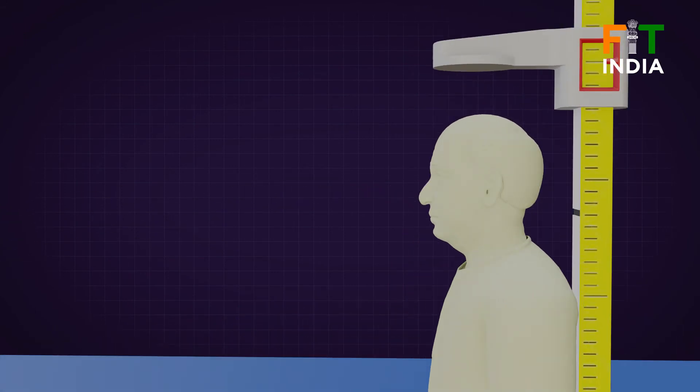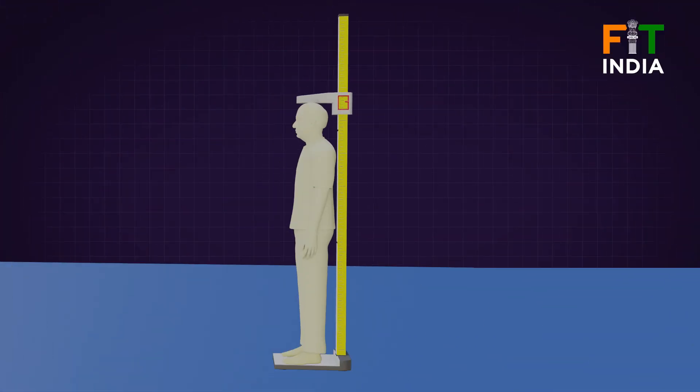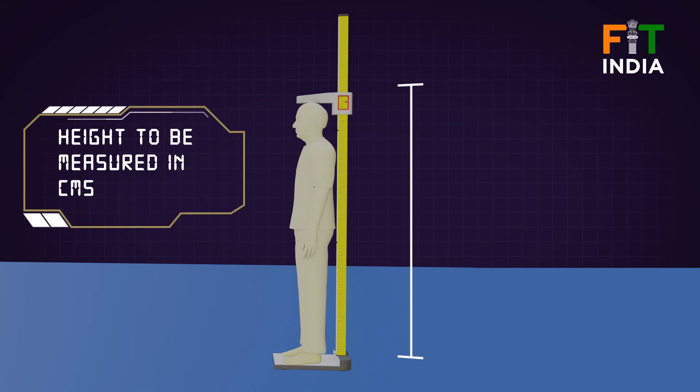Lower the headpiece until it firmly touches the crown of the head. Mark the spot where the bottom of the headpiece meets the wall. The height should be recorded to the nearest 0.1 cm.